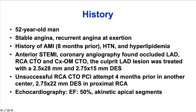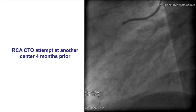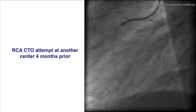The patient had a previous anterior ST elevation myocardial infarction that was treated with a 2.5 x 28 and 2.75 x 15 mm drug-eluting stent, and also had a right coronary CTO that was attempted at a different center a few months prior to the current attempt.